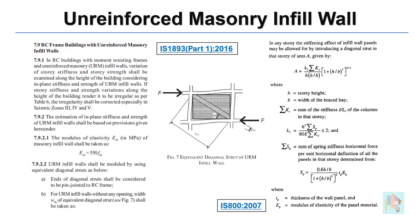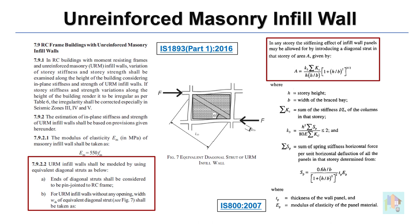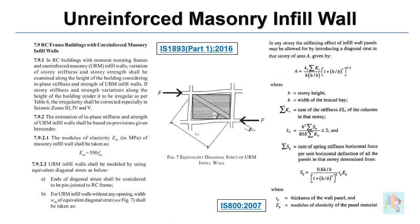The latest IS 1893 or IS 800-2007 code suggests modeling the brick wall as a diagonal strut. A couple of years ago, I compared the behavior of a few structures under lateral load with and without the strut, and noticed that when the brick wall is modeled as a diagonal strut, the column size and reinforcement percentage is reduced by a considerable amount. If you are interested to know about this, let me know in the comments.